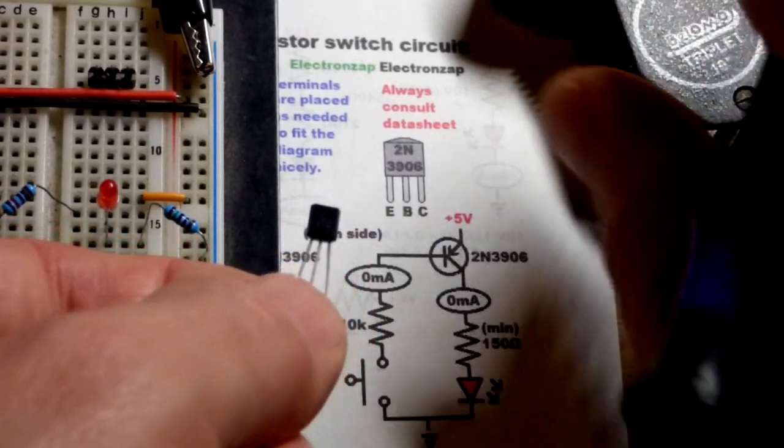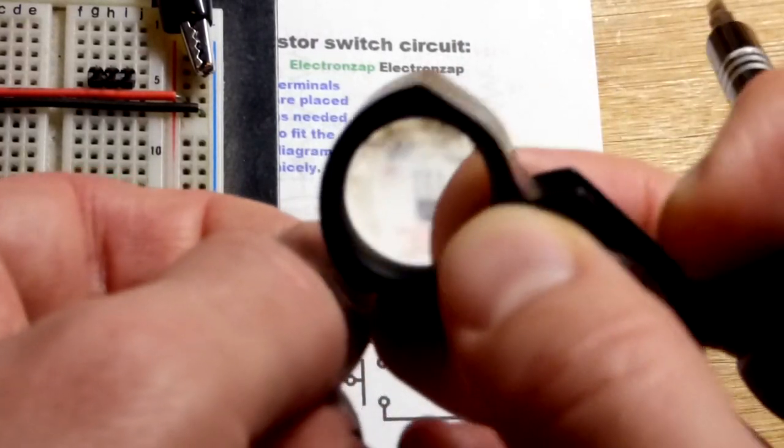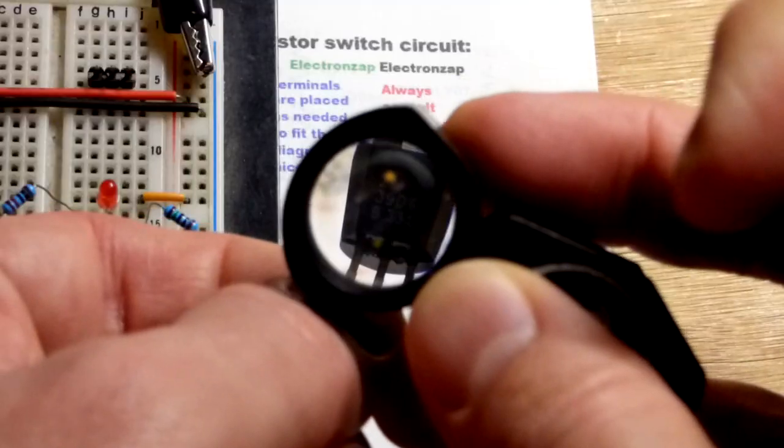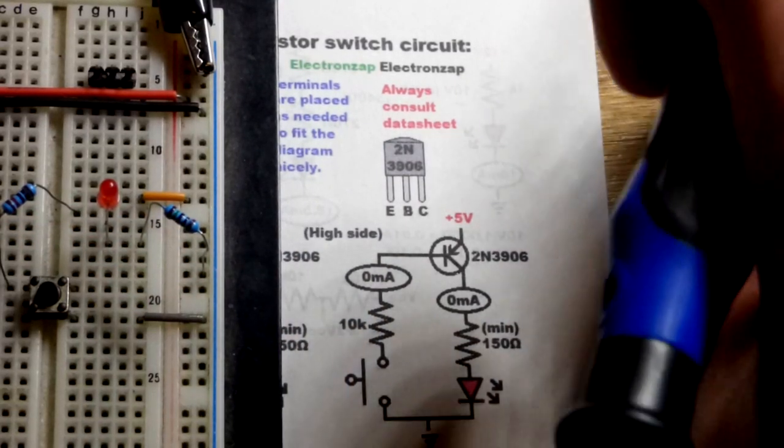Emitter on the left, base in the middle, collector on the right when you're looking at the front. You know, maybe it's hard to read the part numbers, so you may want a loupe or other magnifying glass.